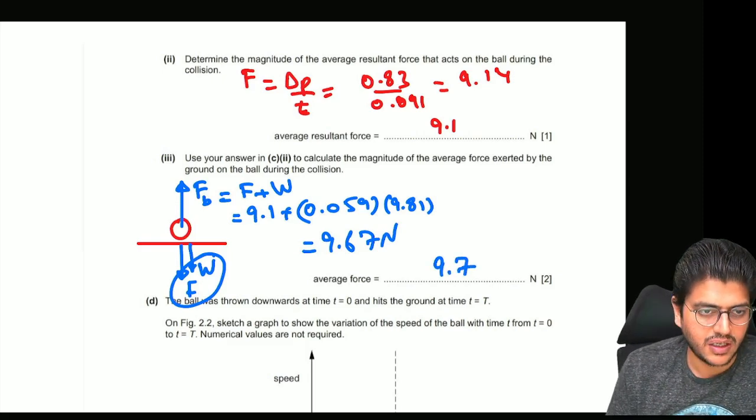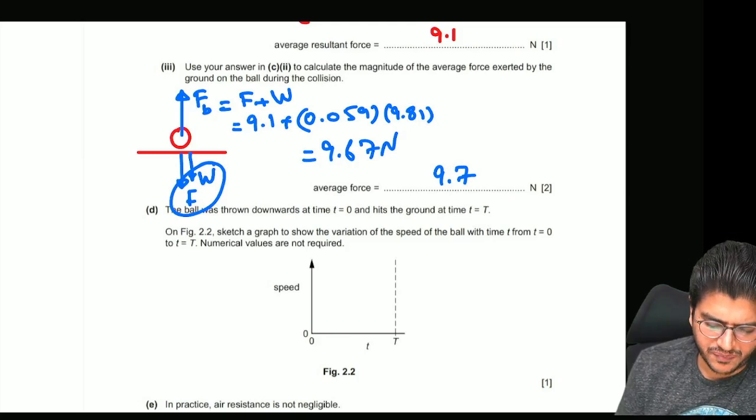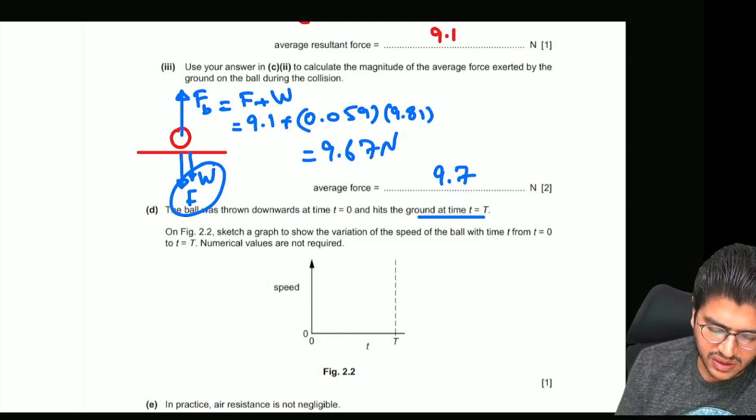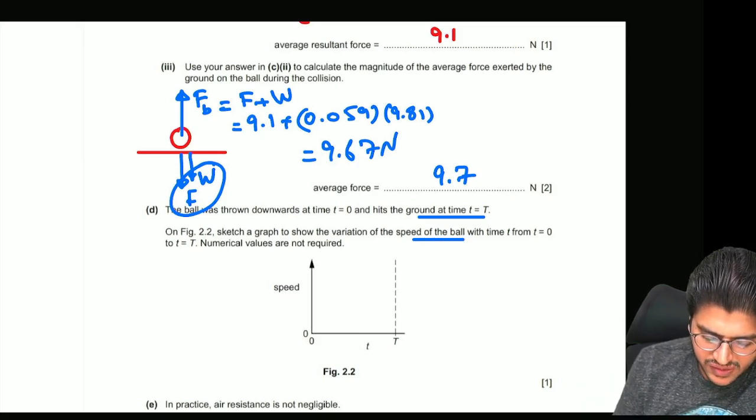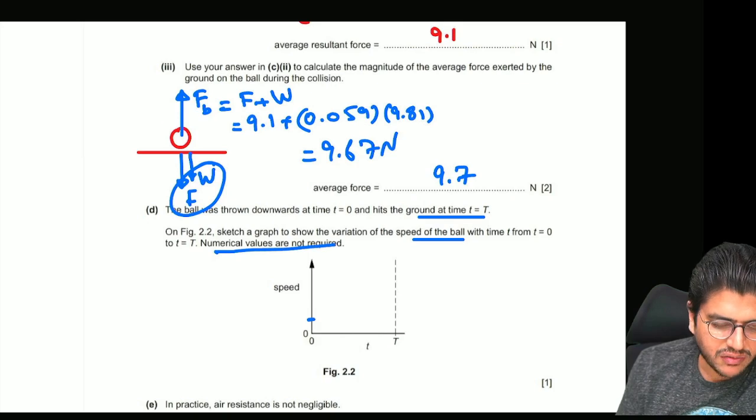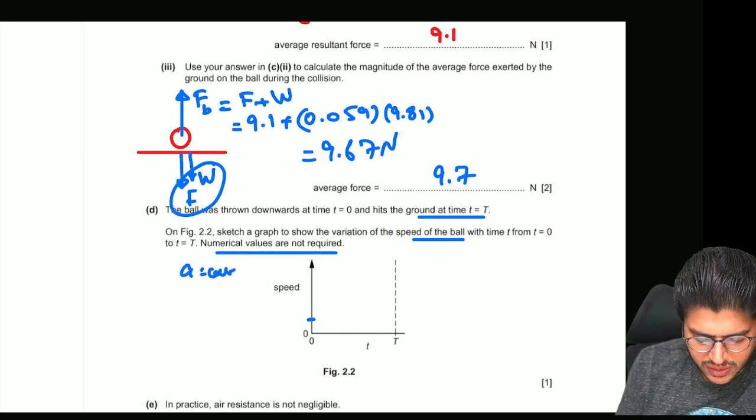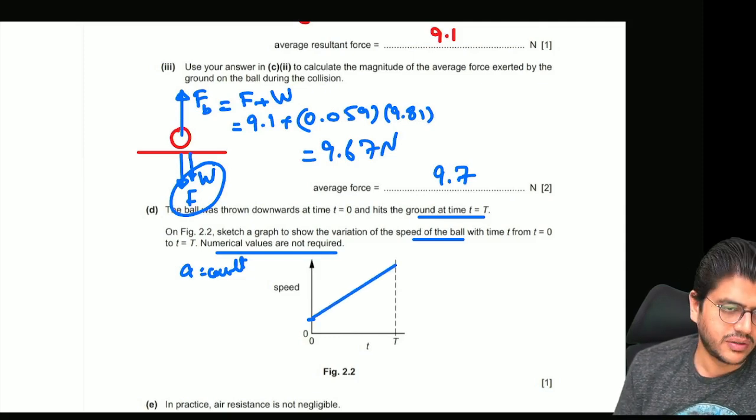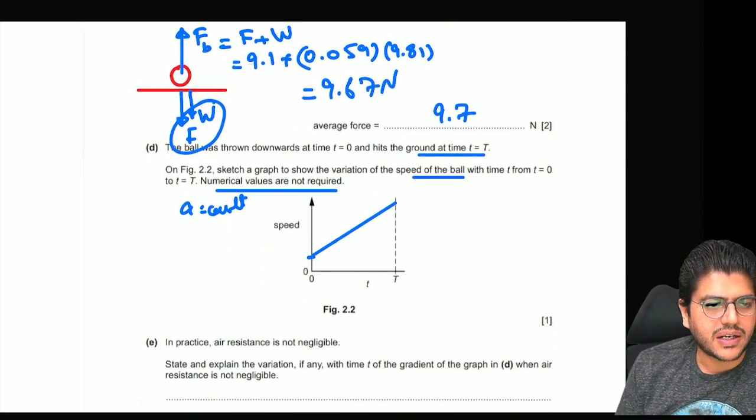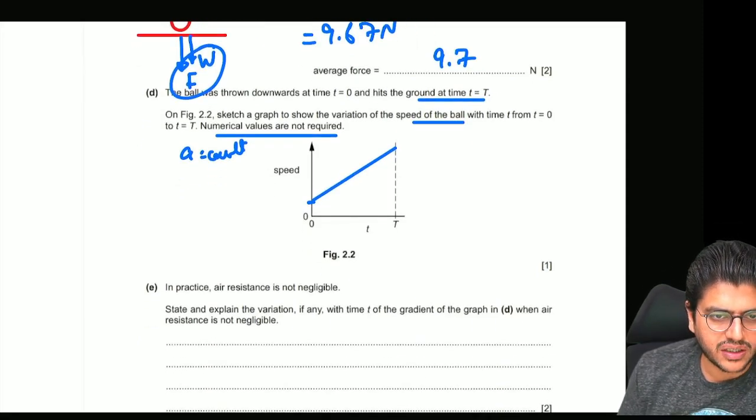The ball was thrown downwards at t equals 0 and hits the ground at t equals T. Sketch a graph of the speed of the ball—direction does not matter. You start off with some initial speed. The numerical values are not required. You knew that air resistance was negligible, so acceleration was constant. This is simply going to be a straight line from here to there.